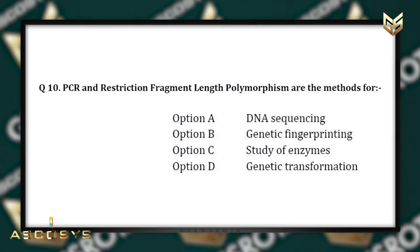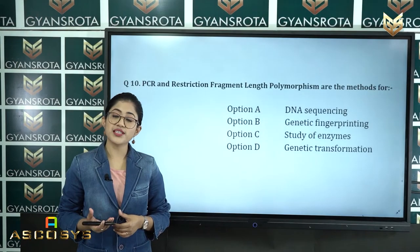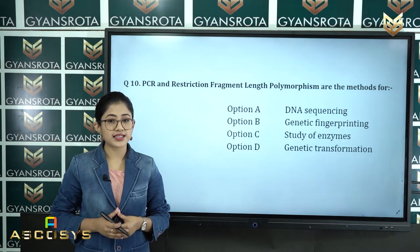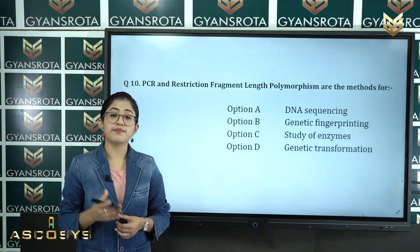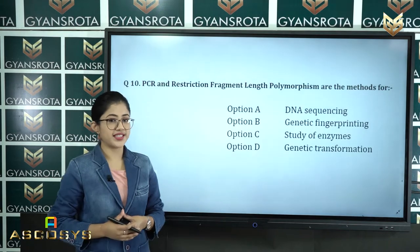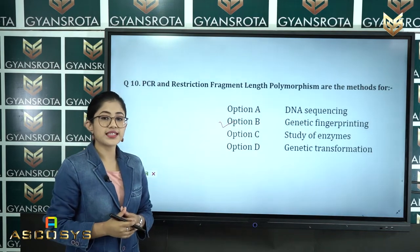Question number 10: PCR and restriction fragment length polymorphisms are methods for — option A DNA sequencing, option B genetic fingerprinting, option C study of enzymes, option D genetic transformation. This is from the chapter Molecular Basis of Inheritance. PCR and RFLP are methods for genetic fingerprinting, so option B is the correct answer.